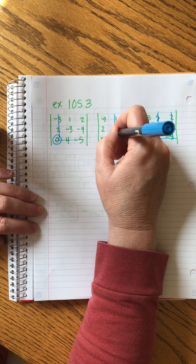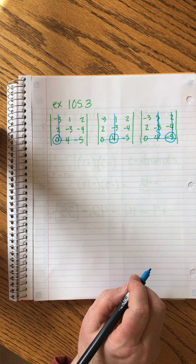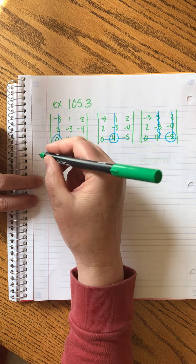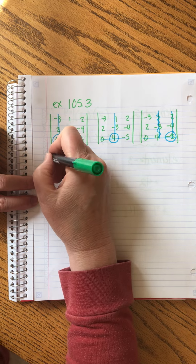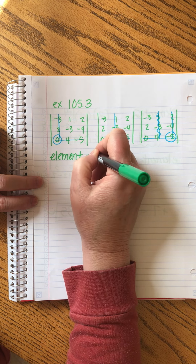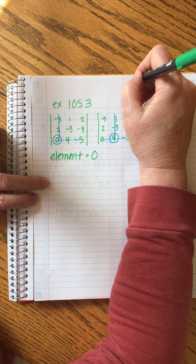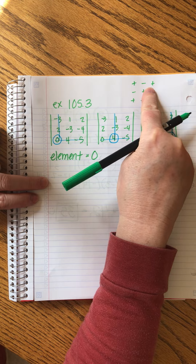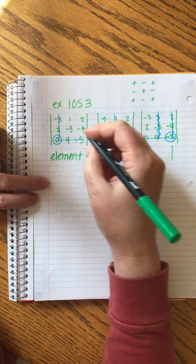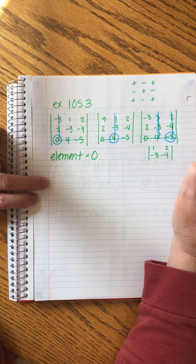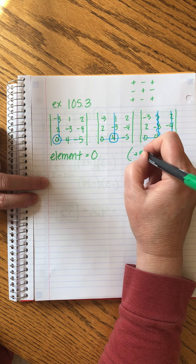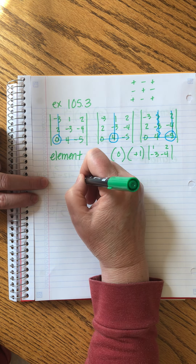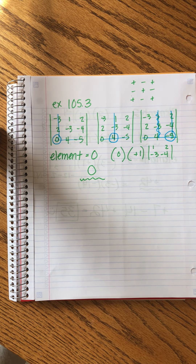We'll do the first element, then the second, then the third — that's always the pattern: choose one row or column, then cross out each element one at a time. The first element is 0. Let's do our checkerboard. The minor is 1, minus 3, 2, minus 4. The sign — we're down here so that's plus. And then the element itself is 0. Well, that just wipes everything out — so 0 is our first of the three pieces we'll add together.